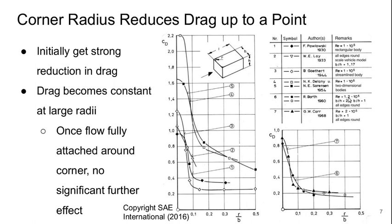The way this works aerodynamically is that adding corner radii at the front end of a bluff body reduces drag up to a point. Initially we get a very strong drop in drag coefficient, as you can see from these plots.